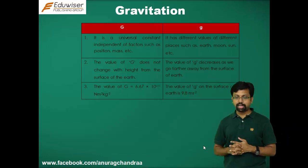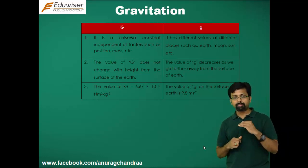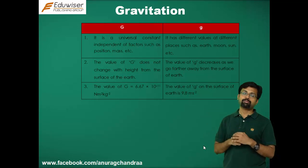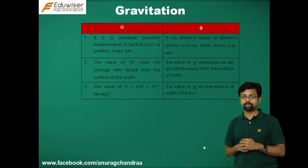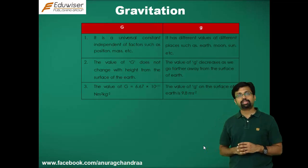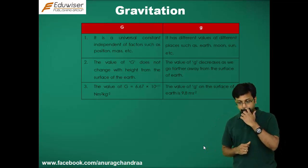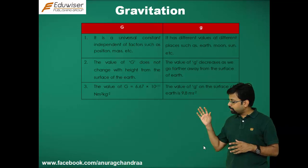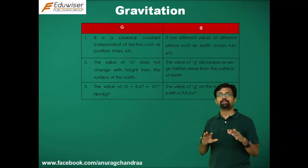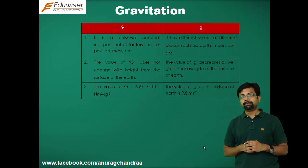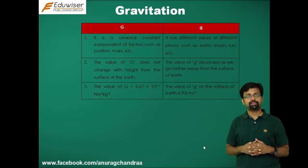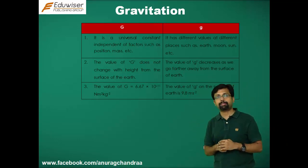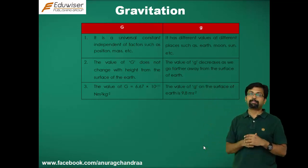The second difference is that the value of G does not change with height from the surface of the earth, whereas the value of small g changes as we increase height above or go deeper below the earth's surface. The value of G is 6.67 × 10⁻¹¹ N·m²/kg², while the value of acceleration due to gravity on the surface of the earth is approximately 9.8 m/s². These are three key differences between G and g.